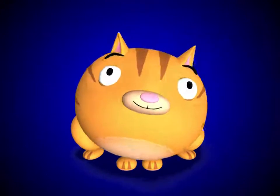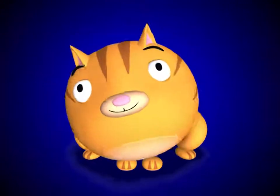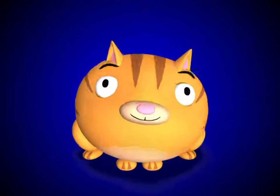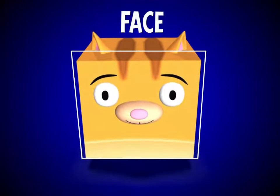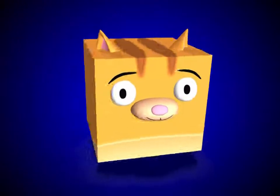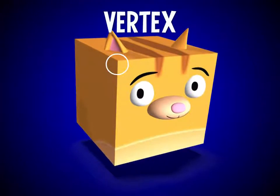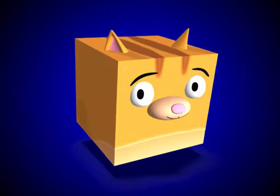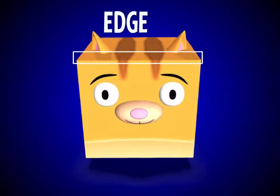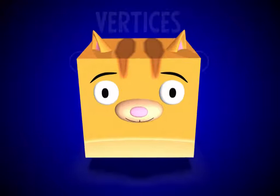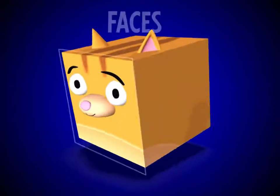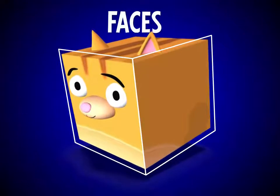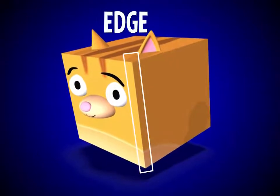Faces, vertices and edges. A face is a flat side of a solid object. A vertex is a corner where two lines intersect. An edge is the line that joins two vertices, or where two faces of a 3D shape connect.